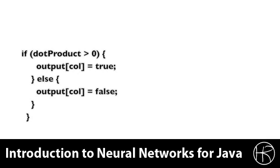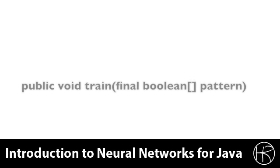This description used a lot of matrix algorithms. You can review these in class session two. Now that we've seen how to recall a pattern from the Hopfield neural network, it's time to see how to train it. This is done by calling the train method that you see here. The train method accepts a Boolean pattern that the Hopfield neural network will be trained for. The train method does not return anything.